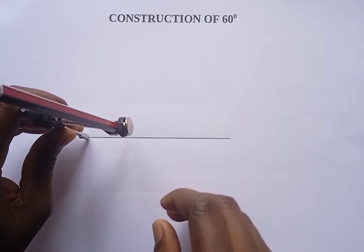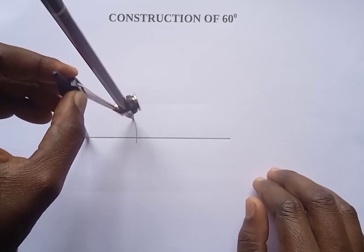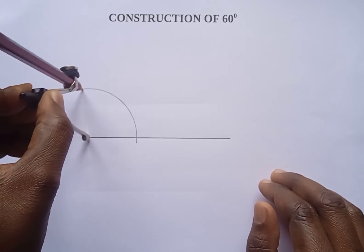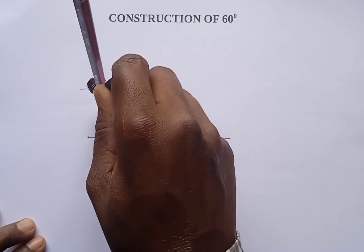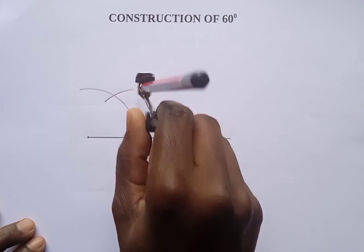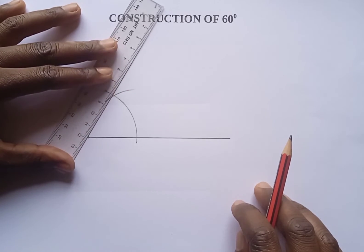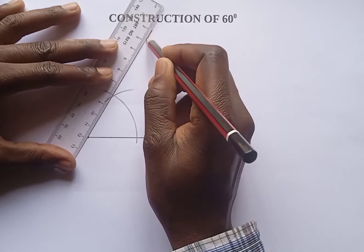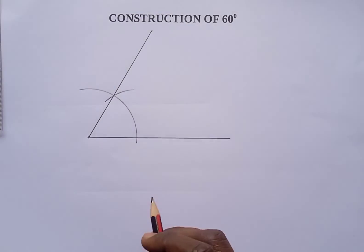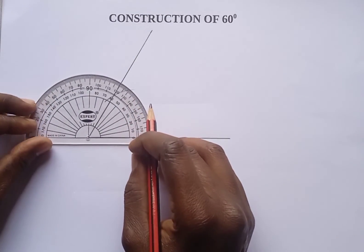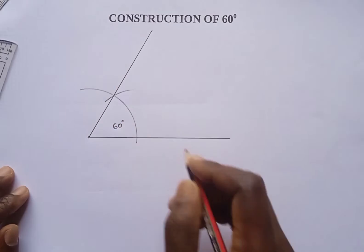From this point we make an arc, then a longer one. From this point we make another arc, then we join these two points. The angle formed is 60 degrees — you can confirm by measuring it.